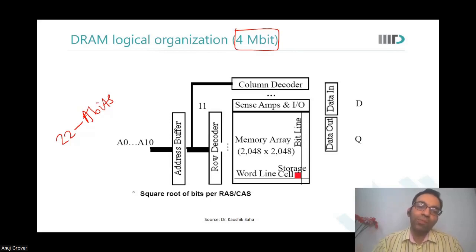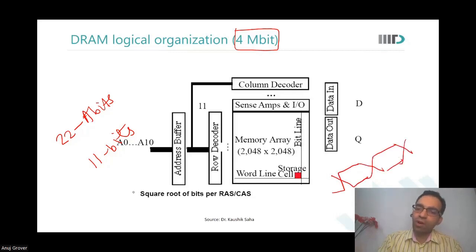DRAMs therefore say that we will organize our data such that 11 bits are used to decode the rows and 11 bits are used to decode the columns. What we will do is, we will first send 11 bits of row address, then we will send 11 bits of column address. And then I will be able to read one particular bit from this array.